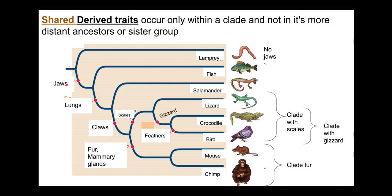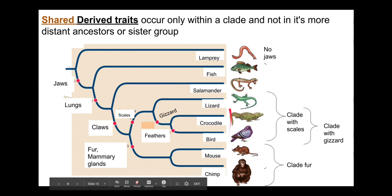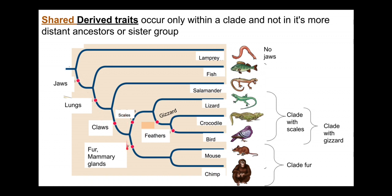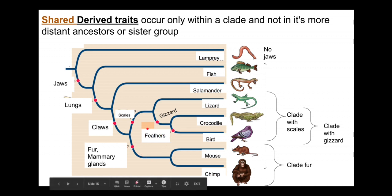Jaws are an apomorphy — a derived characteristic. From previous anatomical structures, jaws were derived, and those jaws are shared by many, many taxa. So it's a shared derived trait, an apomorphy. Lungs are the same way: from previous anatomical structures, evolution derived lungs, and lungs are shared by many taxa downstream. So we can group multiple organisms together by the presence of lungs. Same thing with claws, scales, fur, mammary glands, and so forth.